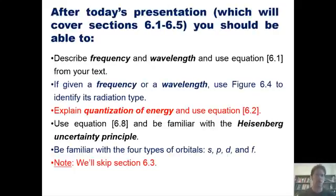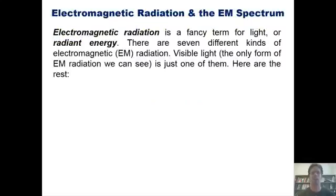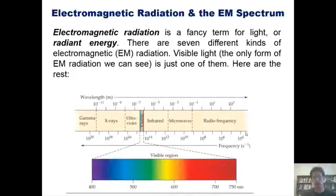In this video, we'll discuss bullet points 1 and 2 from this list, starting with electromagnetic radiation and the electromagnetic or EM spectrum. Electromagnetic radiation is a fancy term for light or radiant energy. There are seven different kinds of electromagnetic or EM radiation. Visible light, which is the only form of EM radiation we can see, is just one of them. Here is a list of the rest.